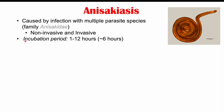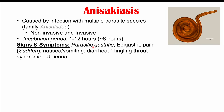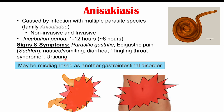When signs and symptoms occur, they include parasitic gastritis — inflammation of the stomach — and a sudden onset of often severe epigastric pain. Patients can also have nausea, vomiting, and diarrhea. Some patients experience tingling throat syndrome, where parasites get up into the throat and cause a tingling sensation. Some patients also develop urticaria, which are itchy hives. This condition is often misdiagnosed as other gastrointestinal disorders, and some cases can be mistaken for appendicitis.